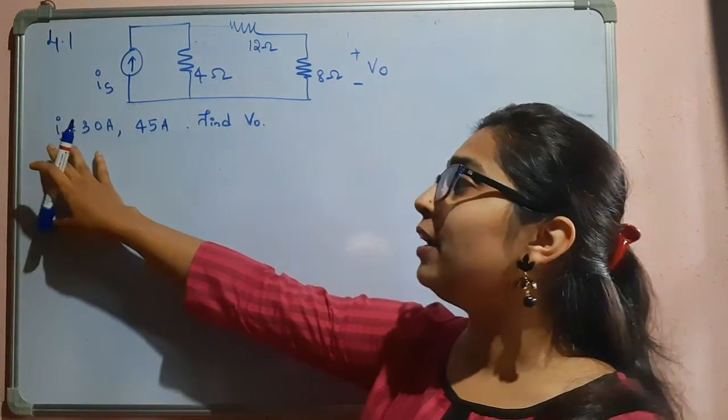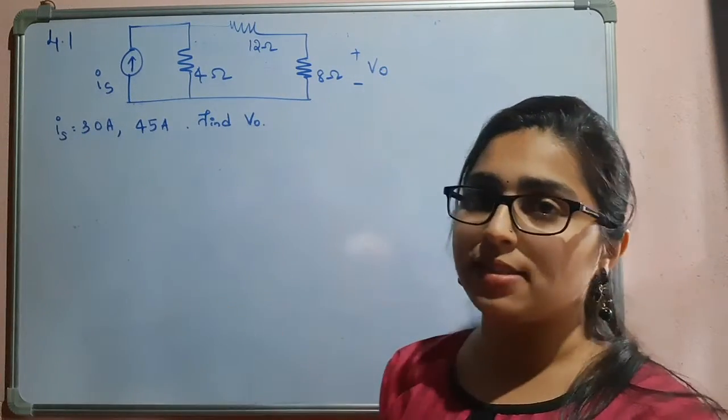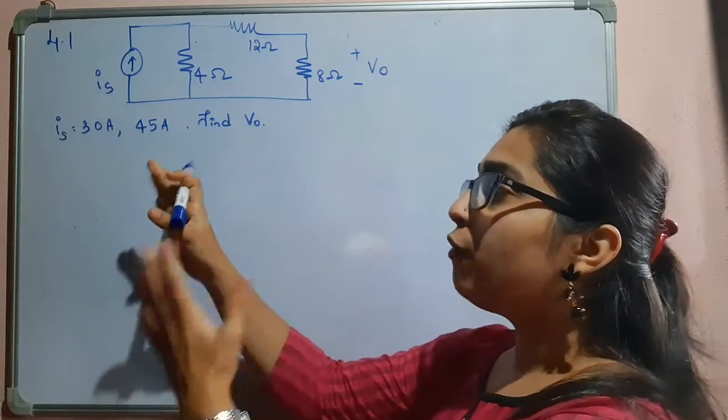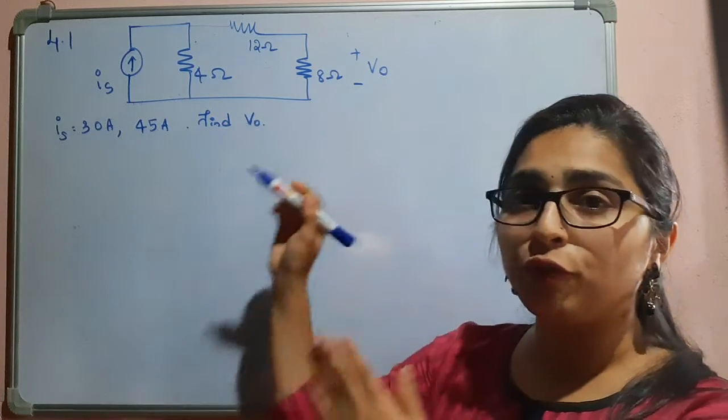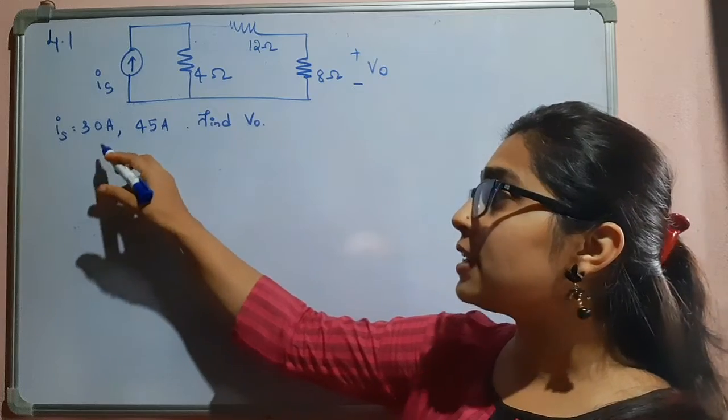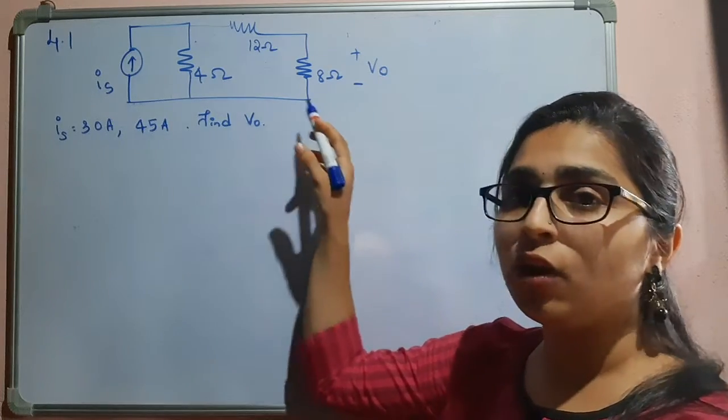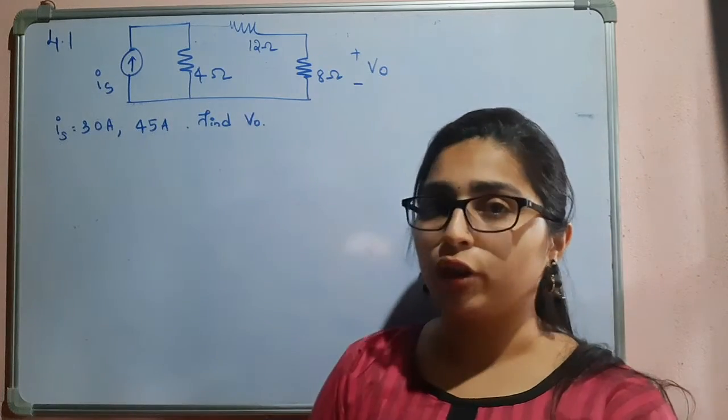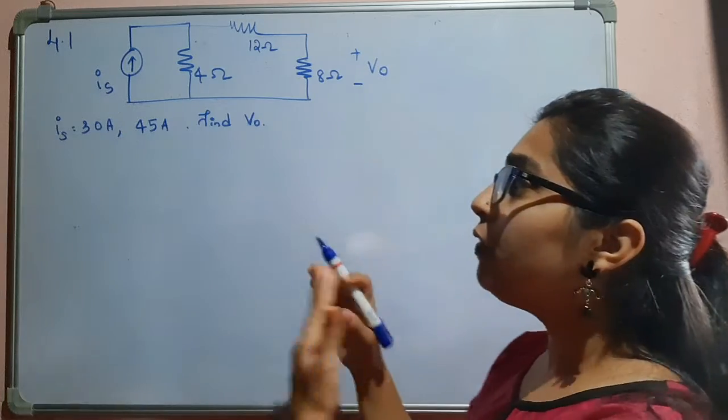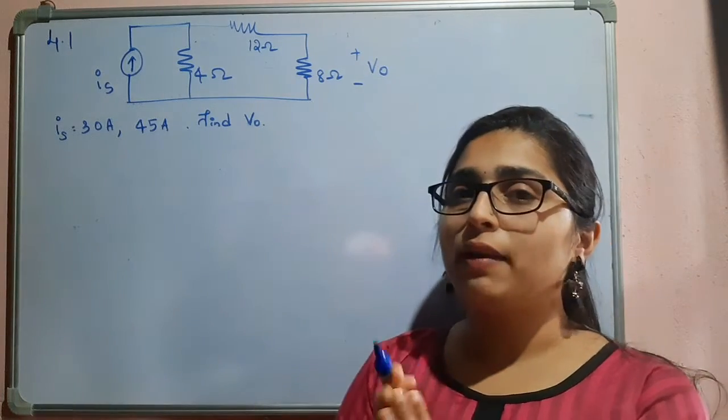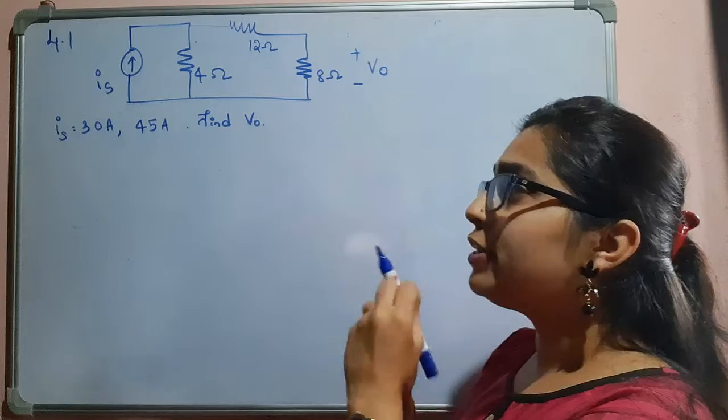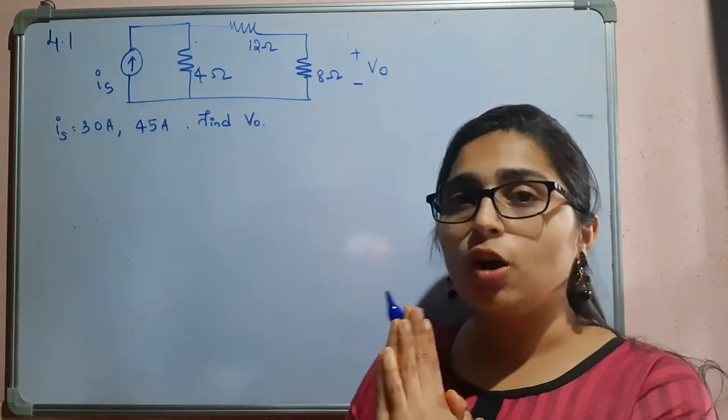First, when IS is equal to 30 amperes you have to find V0, and in the next part you have to find V0 for IS equal to 45 amperes. So we will try to simplify this problem and see in which way this can be solved easily.